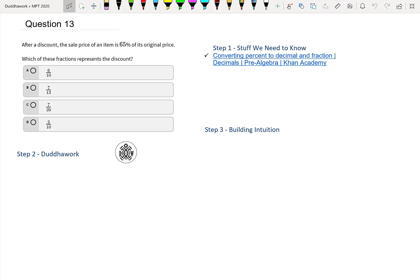Hello everyone, welcome to another episode of Do the Work. Here we're going to cover question 13 of the math proficiency test for teachers in Ontario. We're asked if after a discount the sale price of an item is 65% of its original price, which of these fractions represent the discount?